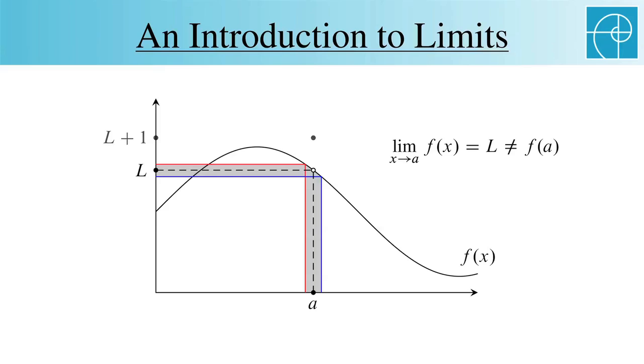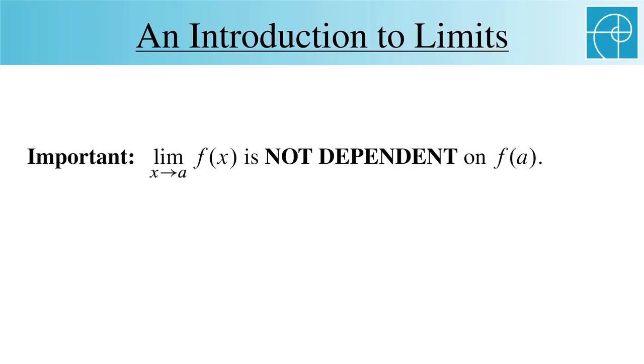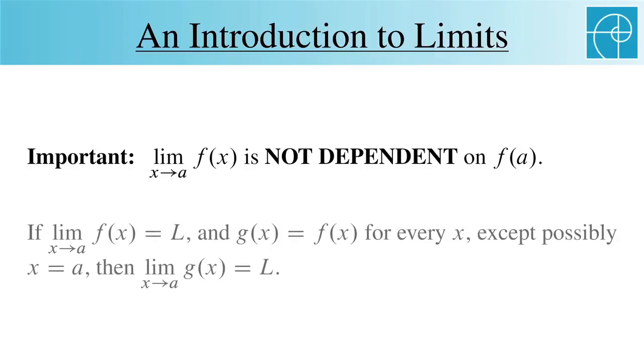In fact, we could remove the value at a altogether, so it's not even in the domain of f anymore, and we still haven't changed the limit. This is one of the most important things to understand about limits. Formally, we just said that if the limit as x approaches a of f(x) is L, and f and g are equal everywhere except possibly at a, then g has the same limit at a.